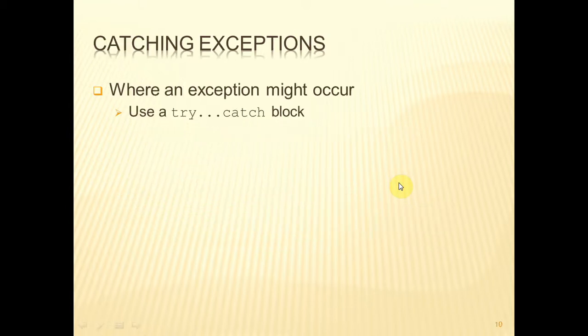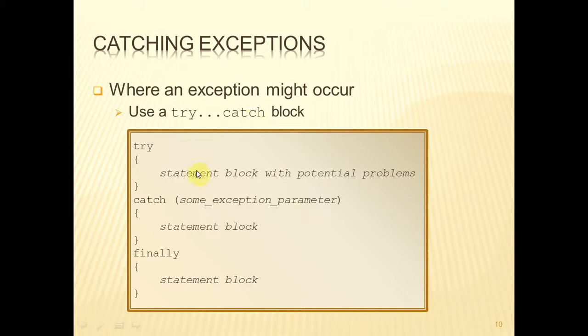Now, where an exception might occur, in other words, where there could be some statements in your Java code that might cause an exception to be thrown, then we can guard against that by using a try-catch block. So those statements that could potentially cause some exceptions to be thrown will be put inside the try-block.